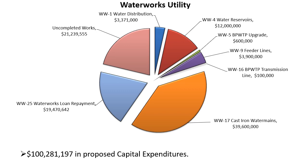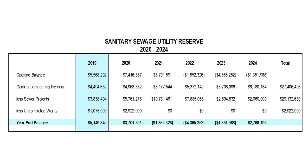In terms of our waterworks utility capital spending, by far the largest component is the cast iron program. In this five-year capital plan, there's almost $40 million dedicated to cast iron water main replacement. Both 2020 and 2021 have significant programs at $9.9 million each. We are able to tap into ICIP federal-provincial funding to reach that level. Also a major component is debt — principal and interest repayments. We already have $30 million in debt for that utility and anticipate the need for another $15 million in this capital plan.